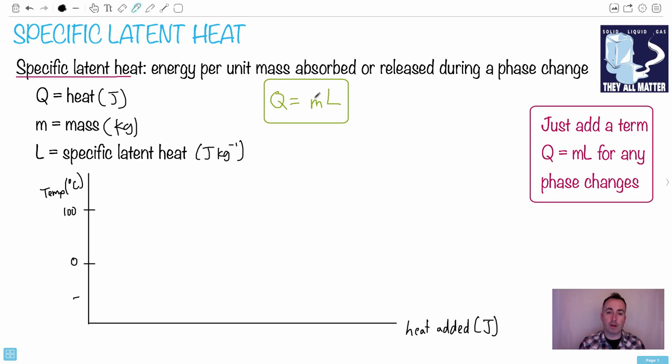Whenever you're working with these situations where you've got a phase change happening and things changing temperature, then all you would have to do is add a term Q equals ML for any phase changes. For example, let's say you had tea being put into a cup, but maybe that cup also had ice in it.